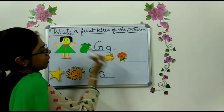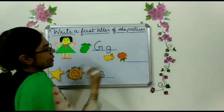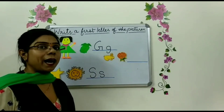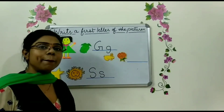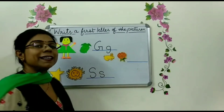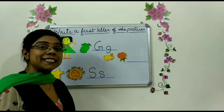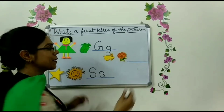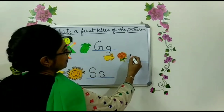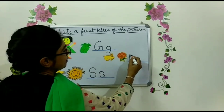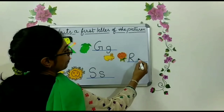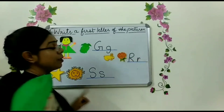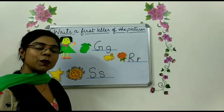Now the last picture. What is this? This is R for rabbit. And this one? Yes, this is R for rose. R for rabbit, R for rose.